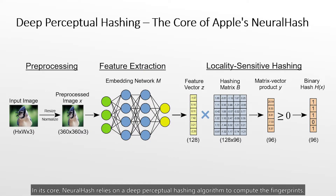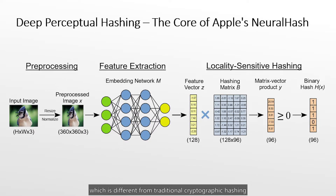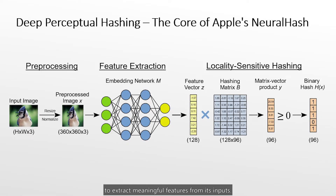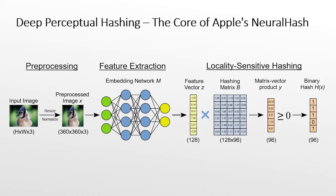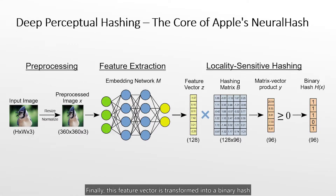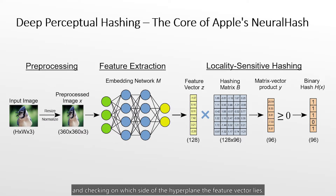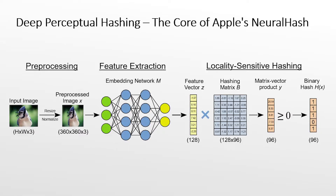At its core, NeuralHash relies on a deep perceptual hashing algorithm to compute fingerprints. Perceptual hashing aims to produce similar hash values for similar content, which is different from traditional cryptographic hashing that computes strongly differing outputs for small input changes. Deep perceptual hashing further uses neural networks to extract meaningful features. The NeuralHash pipeline consists of three steps: first, input images are resized to a fixed representation; then, a neural network extracts features as a real-valued vector; finally, this feature vector is transformed into a binary hash via a locality-sensitive hashing step, defined by random hyperplanes — realized mathematically as a matrix-vector product followed by a step function.